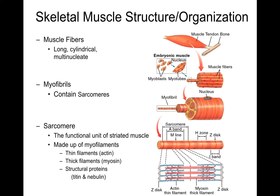It was studying the morphology that led to a theory of how muscles actually contract — we'll talk about that shortly. The sarcomere is made up of myofilaments, and there are several parts: the thin filaments, which are actin; the thick filaments, which are myosin; and the structural proteins titin and nebulin.